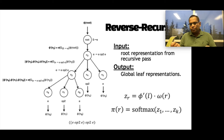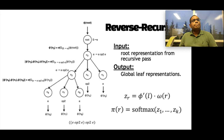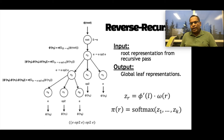One interesting design choice: rather than always expanding the leftmost leaf node, we give the model freedom to select nodes to expand in any order. Our intuition was that programmers don't write code strictly left-to-right — sometimes we write a piece of code, then go back and modify something else. We wanted to capture that non-linear behavior by giving the model freedom to expand nodes in any order.